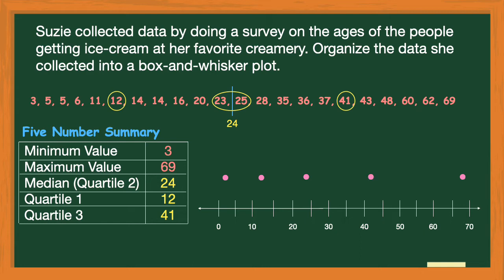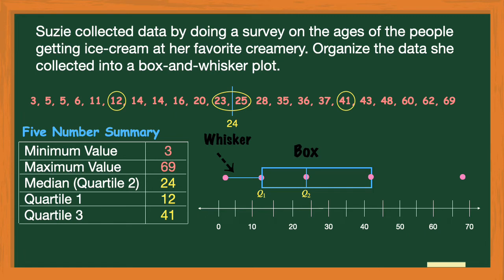Next I construct my box, which encompasses the three quartiles. I draw a line through the center dot at the median, separating the box into two equal parts. Then I draw my whiskers: the first whisker goes from quartile one to my minimum value of three, and the second whisker goes from quartile three to my maximum value of 69. And there you have it — you have just constructed a box and whisker plot.